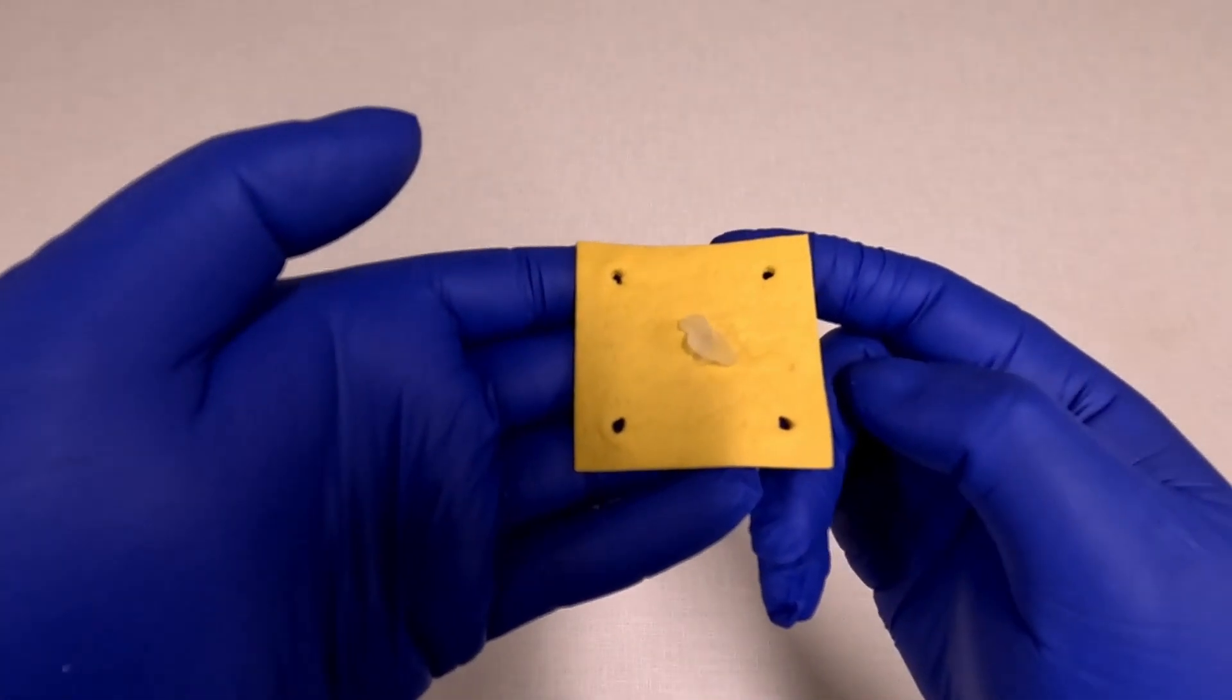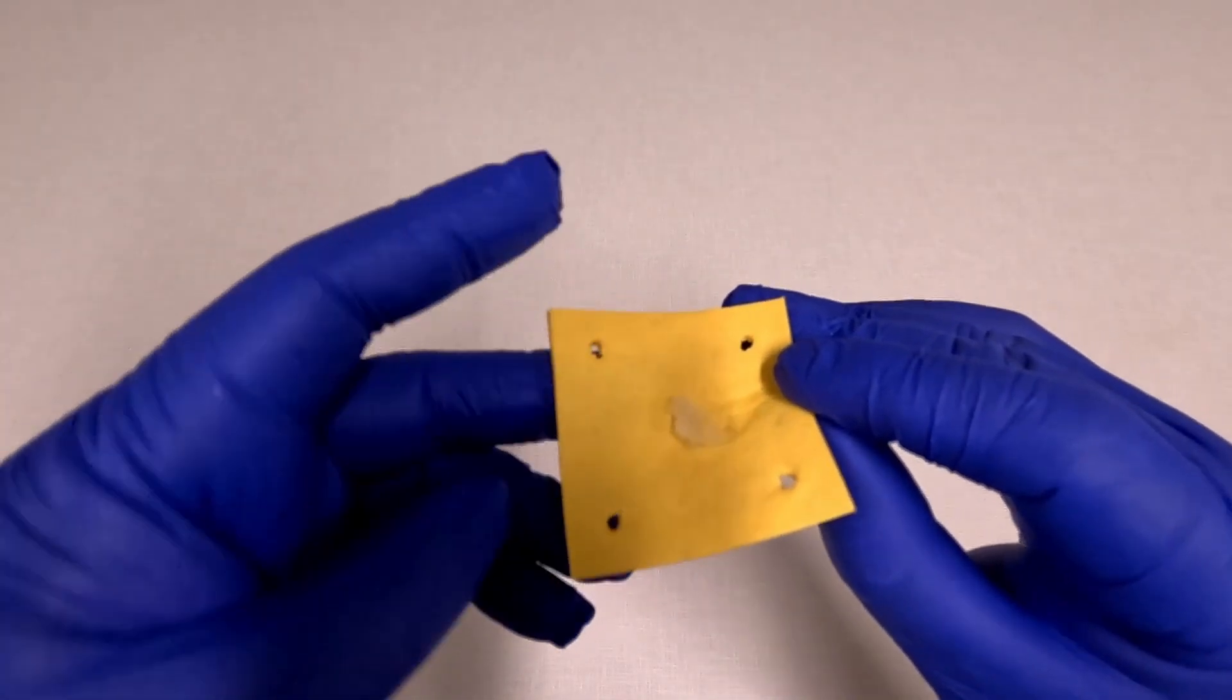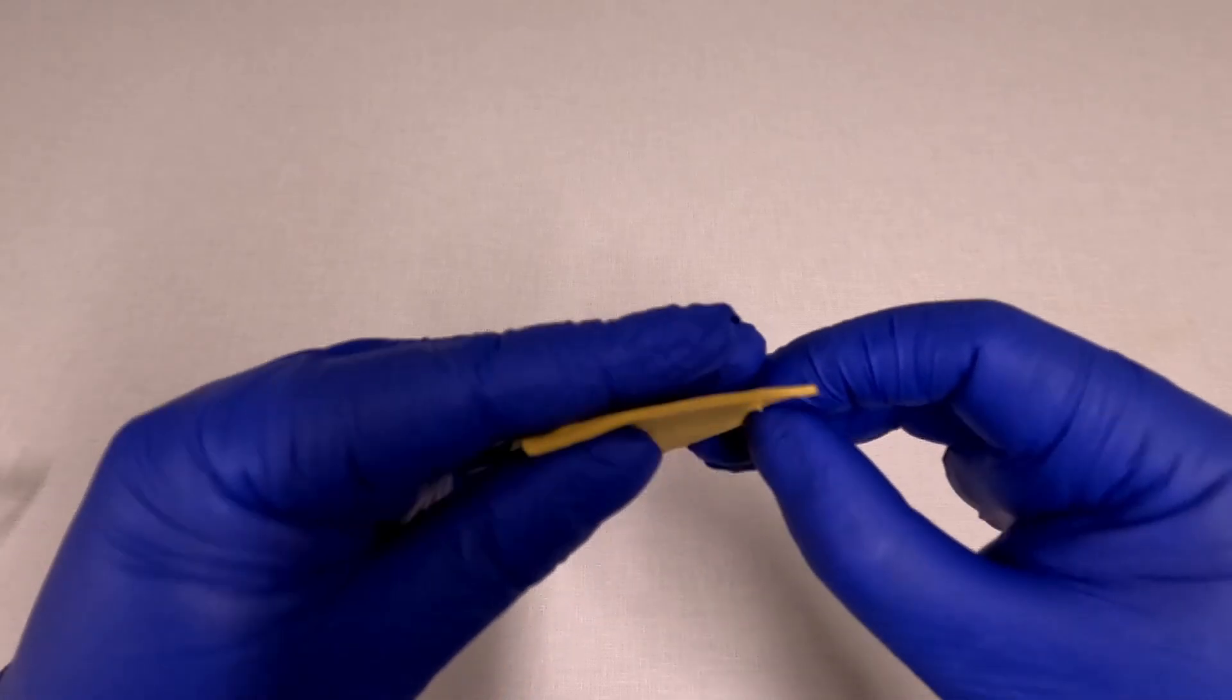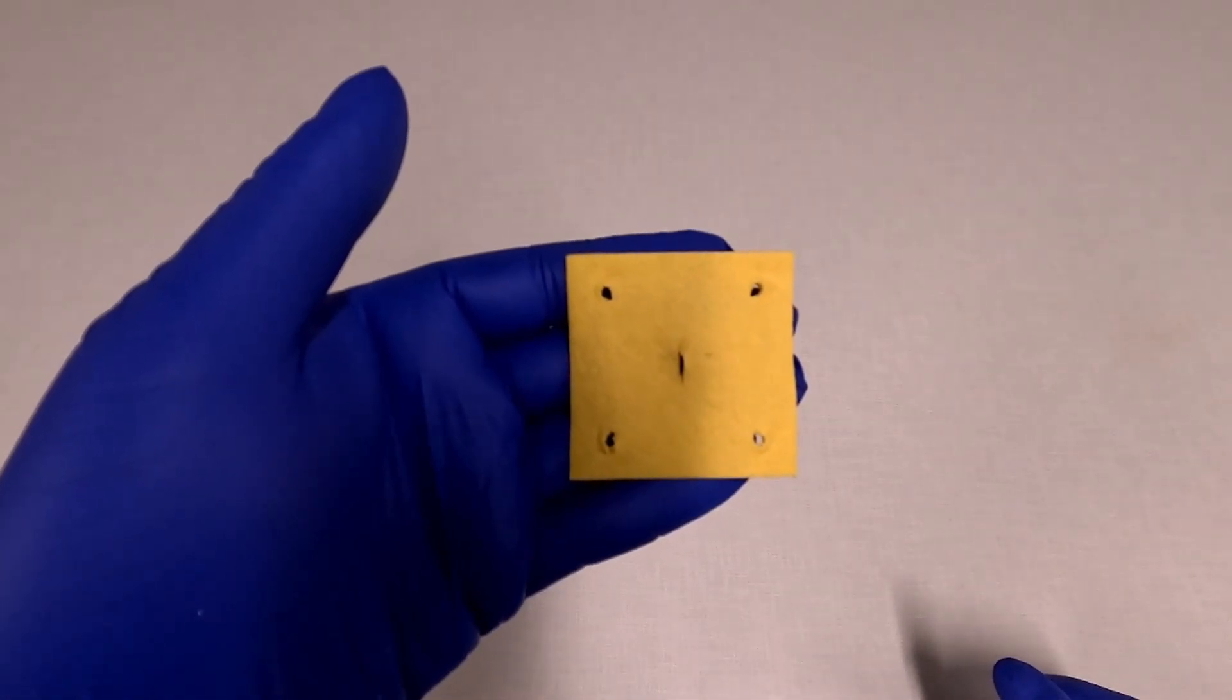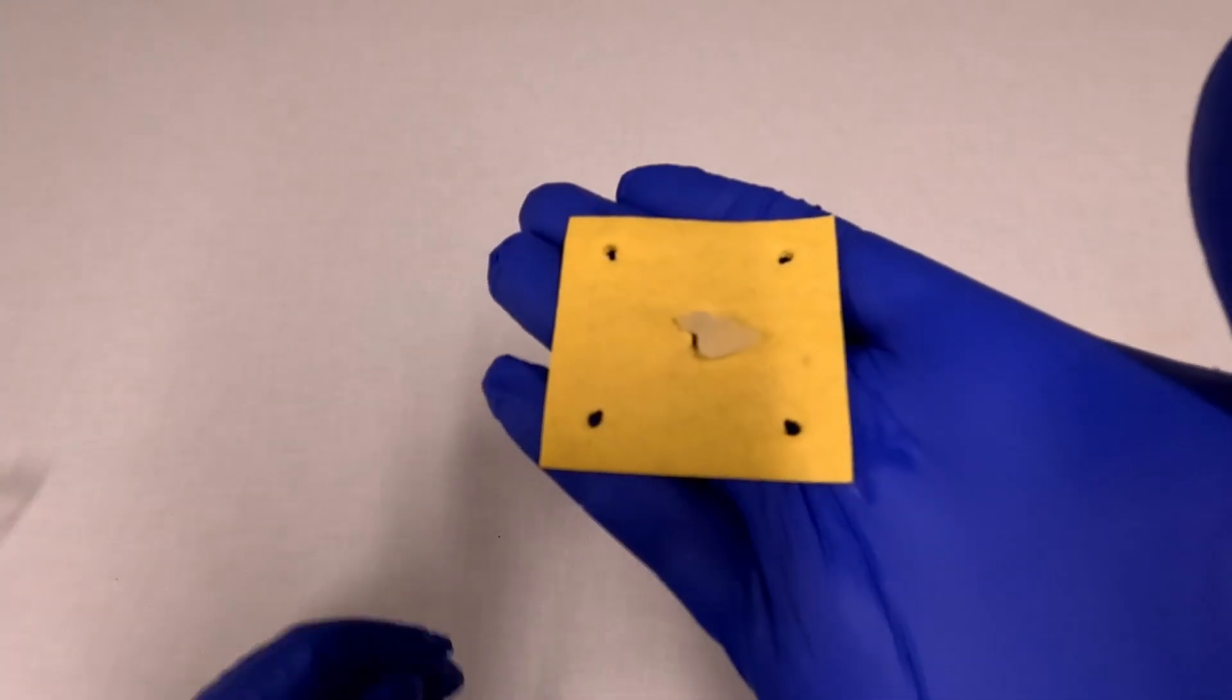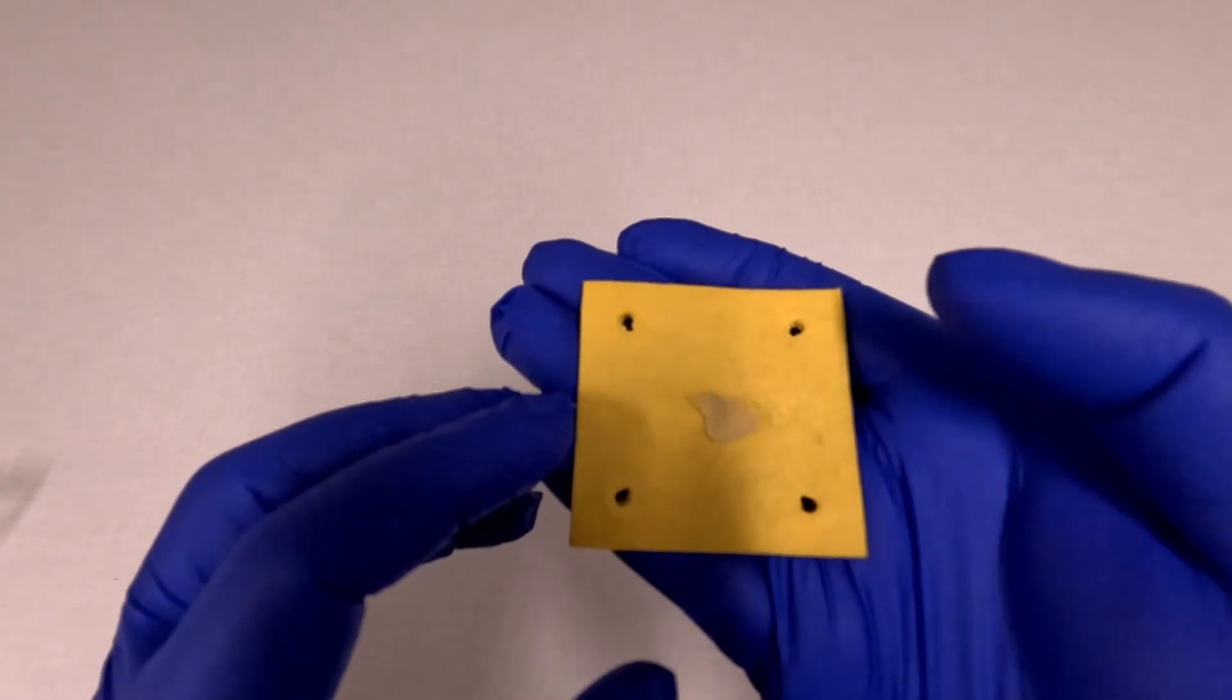Looking at the arteriotomy, we have the polyethylene glycol plug on the outside. And then on the inside, there's nothing because the balloon came out. The polyethylene plug will stay in place for about 30 days and it'll dissolve completely by hydrolysis.